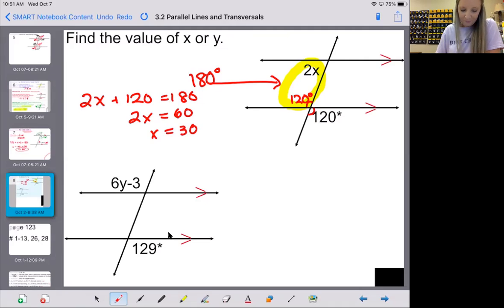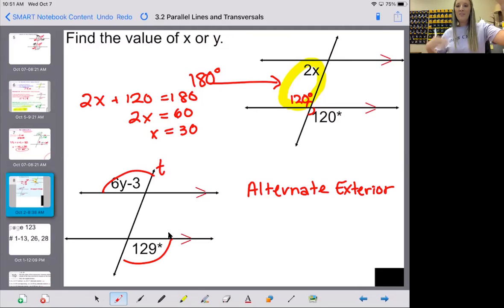Last one for today. On this one, notice that these two angles, they do have a relationship. Those are called alternate exterior. And remember, alternate exterior is when they're on alternating sides of the transversal, but they are both outside or exterior of the parallel lines.